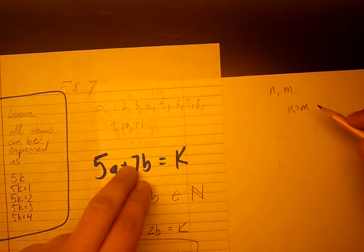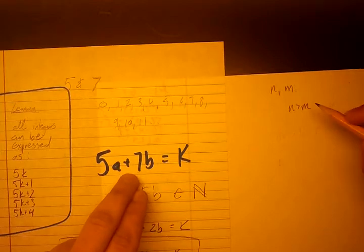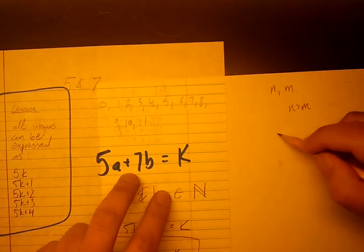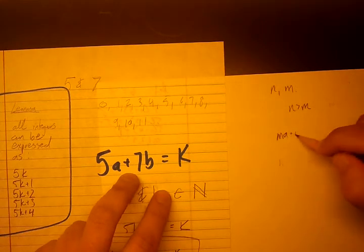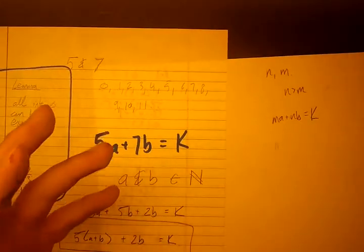So now, remember what we did in this example. We wrote this blue formula down: m times a plus n times b equals k. And that's the general statement of the problem.